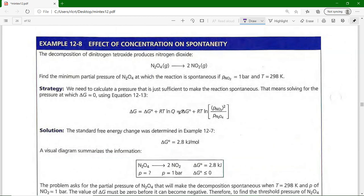Let's jump straight to an example of how this works. Example 12.8: We looked at this example reaction a few times, so N₂O₄ goes to 2NO₂. Find the minimum partial pressure at which the reaction is spontaneous. The partial pressure of NO₂ was 1 bar and the temperature is 298 kelvin. So we have ΔG = ΔG° + RT ln Q, which is ΔG° + RT ln of the partial pressure of NO₂ initial over the partial pressure of N₂O₄ initial.